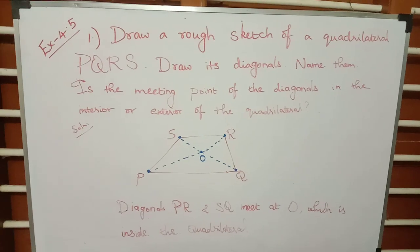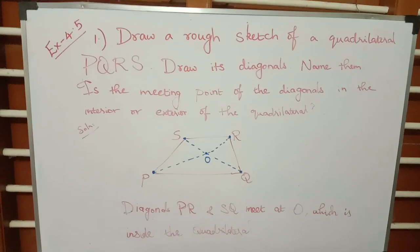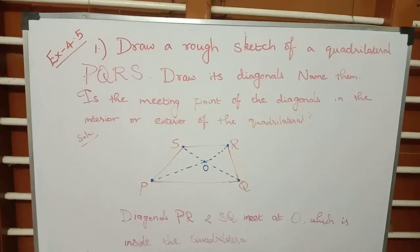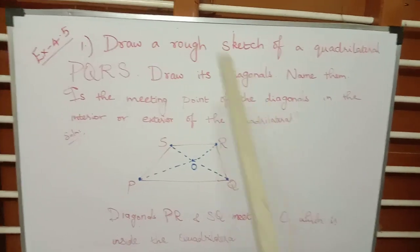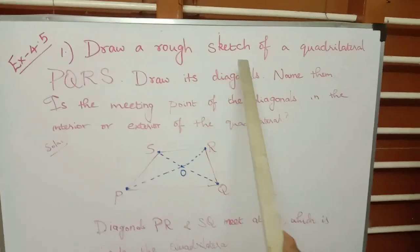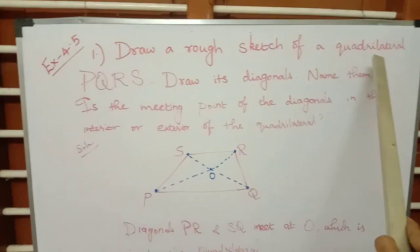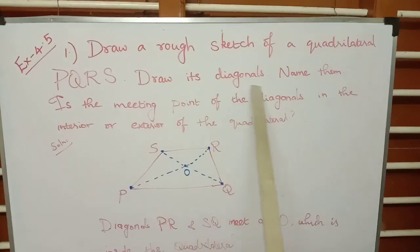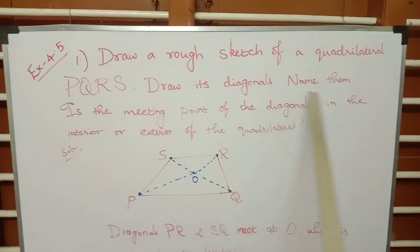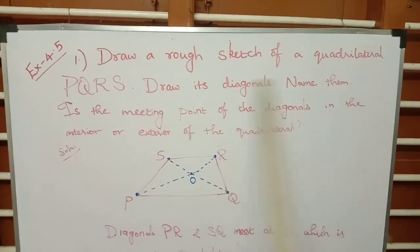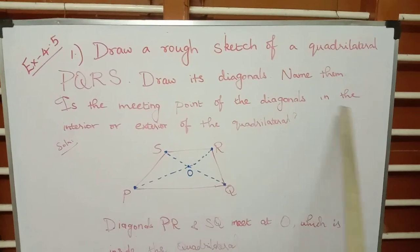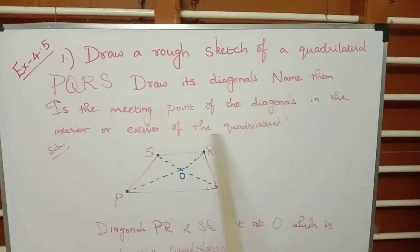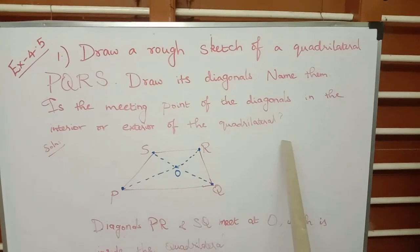Hello everyone, today we are going to see the first problem in exercise 4.5. Draw a rough sketch of a quadrilateral PQRS, draw its diagonals, and name them. Is the meeting point of the diagonals in the interior or exterior of the quadrilateral?